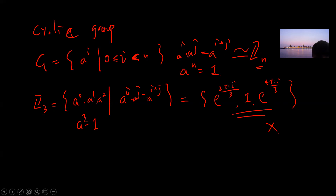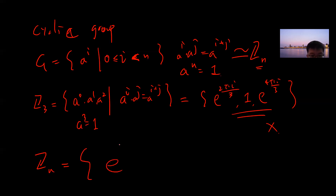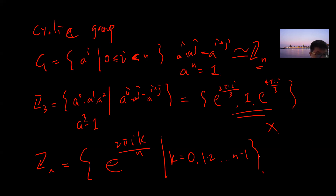You can generalize: the Z_n representation is {e^{2πik/n} : k = 0, 1, ..., n−1}. Up to now everything is trivial — let's look at more interesting examples.